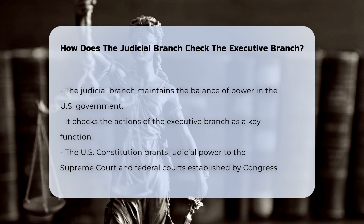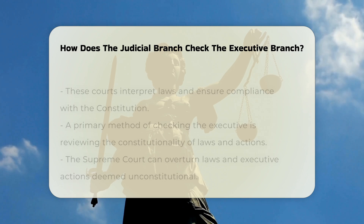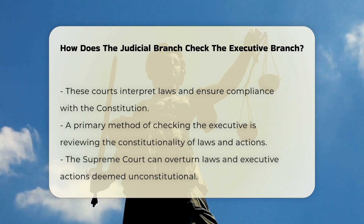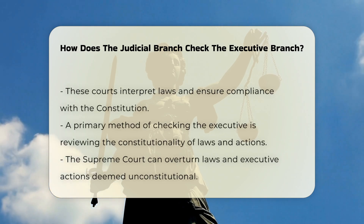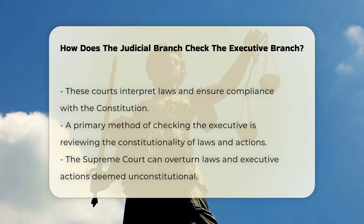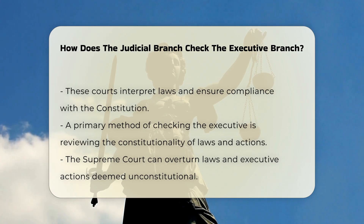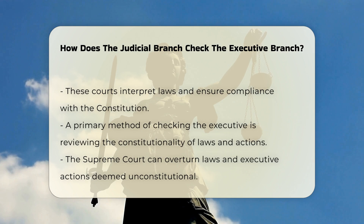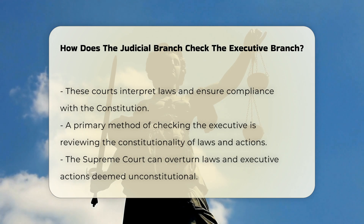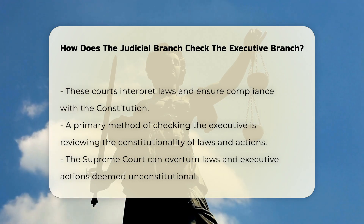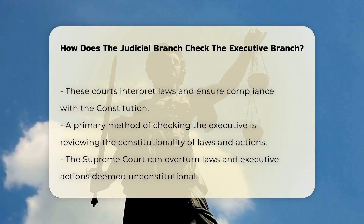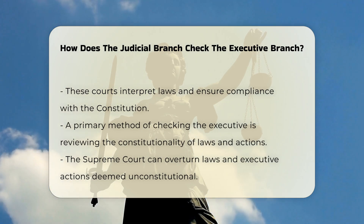One of the primary ways the judicial branch checks the executive branch is by reviewing the constitutionality of laws and actions. The Supreme Court can overturn laws passed by Congress and signed by the president if they are deemed unconstitutional. This power extends to executive actions as well, including executive orders and regulations issued by executive agencies.